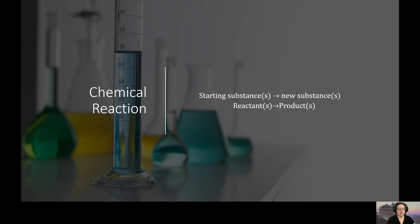So let's take a deeper look at chemical reactions. Chemical reactions in its most simple form can be described as a starting substance or substances becoming new substances. So we use technical terms for that, and that's reactants for the starting substance and products for the new substance. So whenever we talk about reactants, we're talking about whatever you start with. And when we talk about products, it's whatever you're going to end up with.